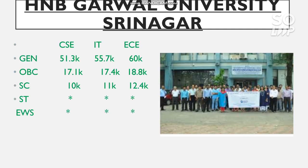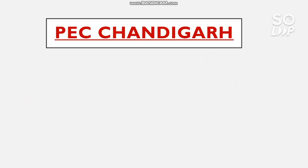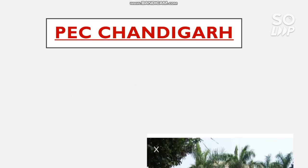The next is HNB Garhwal University, Srinagar. Here is the cutoff for General: 51,300 (CS), 55,700 (IT), and 60,000 (EC). You can check the other category cutoffs by scrolling down.